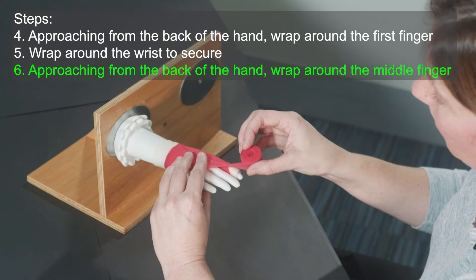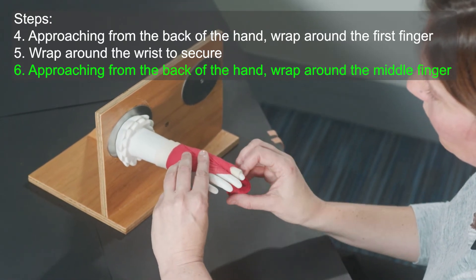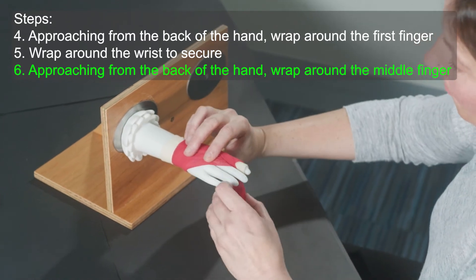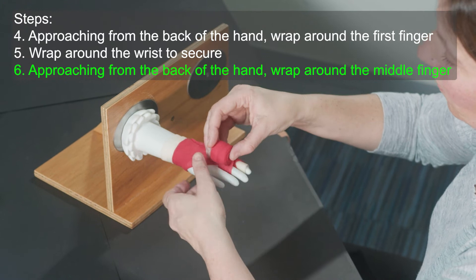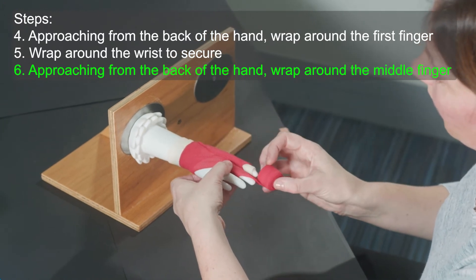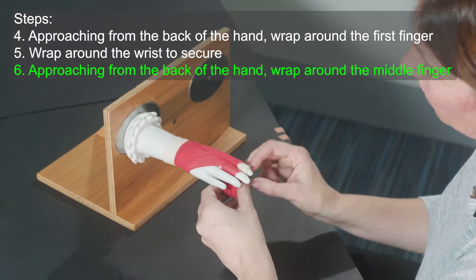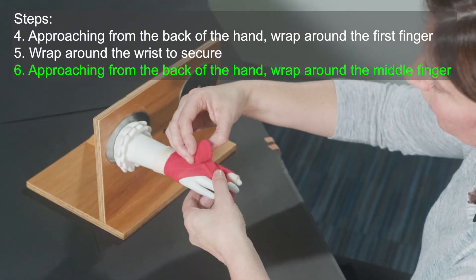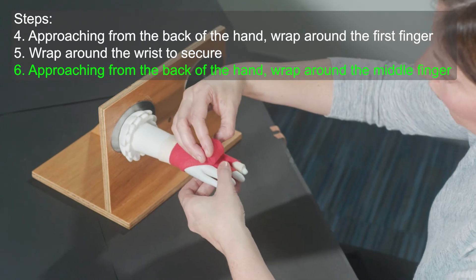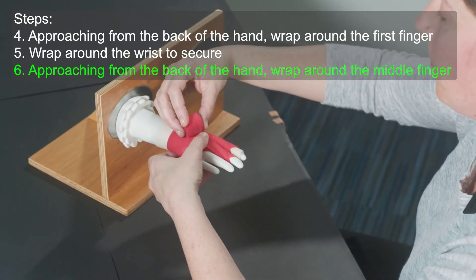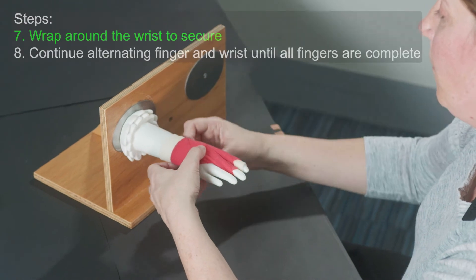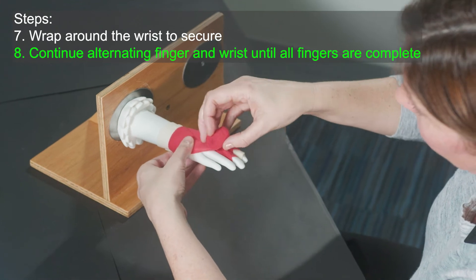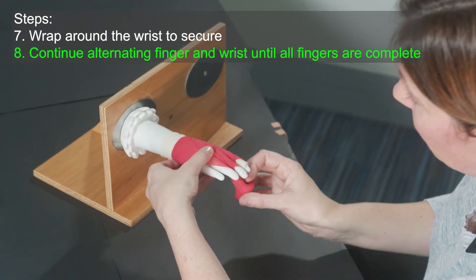You're just going to go around the wrist and we're going to go straight up to doing the middle finger. You're going to bring your wrap again, just holding it at the back of the hand so you're not putting too much tension on the bandage as you're bringing it through the web space. One of the things that's nice about wrapping each finger is that we can use the gentle stretch in the bandage to try and help open the fingers and keep them as straight as possible.